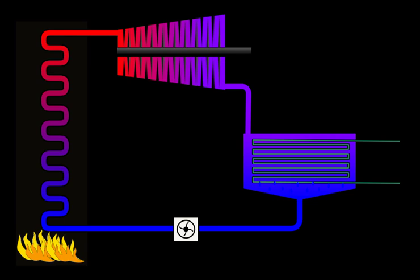The Rankine cycle is a model used to predict the performance of steam turbine systems. It was also used to study the performance of reciprocating steam engines. The Rankine cycle is an idealized thermodynamic cycle of a heat engine that converts heat into mechanical work while undergoing phase change.